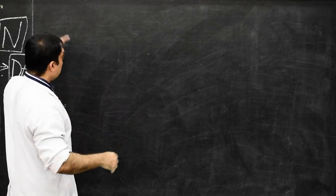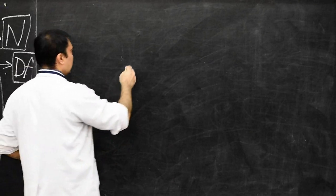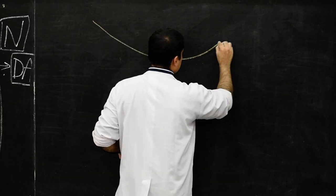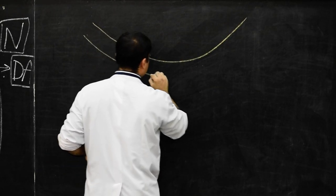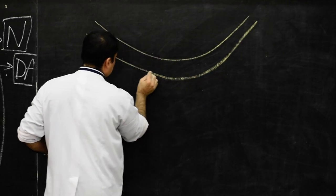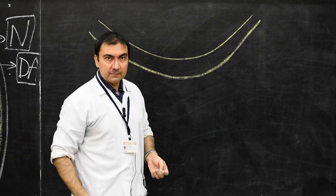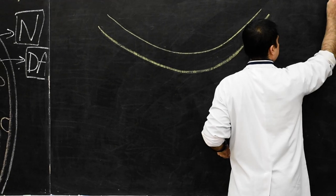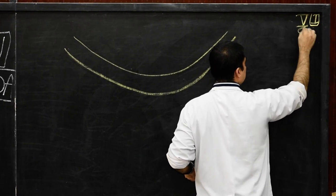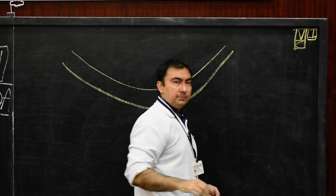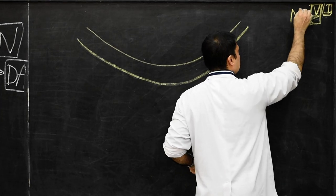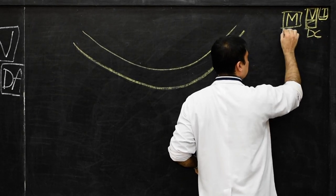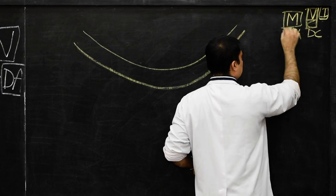The entire first pharyngeal arch is divided into ventral and dorsal components. The ventral component is represented as the mandibular process, and the dorsal component of the first pharyngeal arch is known as the maxillary process.